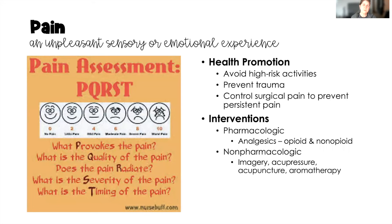For pain assessment, always think about your PQRST assessment — whether it's chronic or acute pain. P stands for what provokes the pain — what is making it worse. Q is the quality of the pain — how does the patient describe it. R is for radiate — does the pain radiate to another part of the body. S is severity — what is the severity of the pain, often assessed using a pain scale.